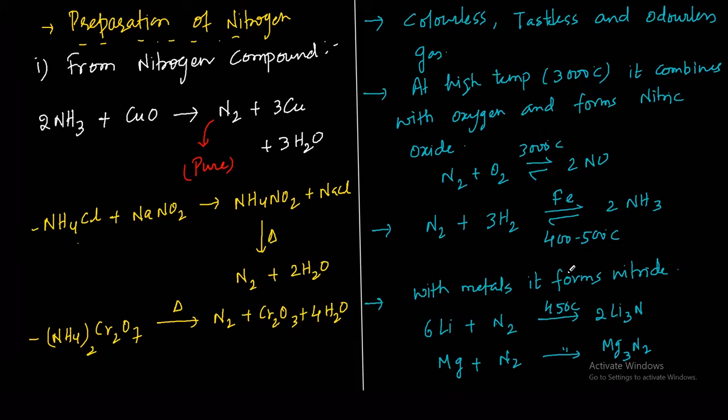With non-metals: 2B plus N2 forms BN boron nitride. 3Si plus 2N2 forms Si3N4 silicon nitride.